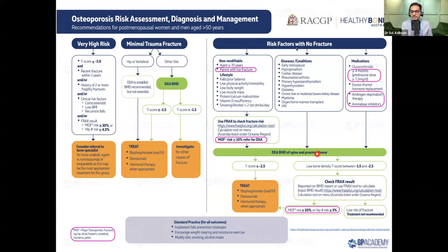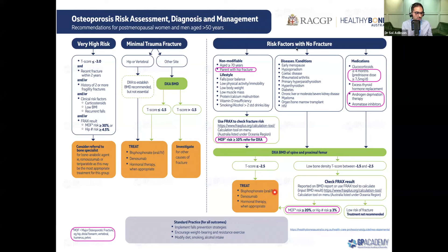If the t-score indicates osteoporosis at less than minus 2.5, we use the usual treatment options available in general practice. Most commonly, bisphosphonates are preferred first — they are considered safest in the long run, have been around longer than denosumab, and are considered safer and more effective provided contraindications are excluded.